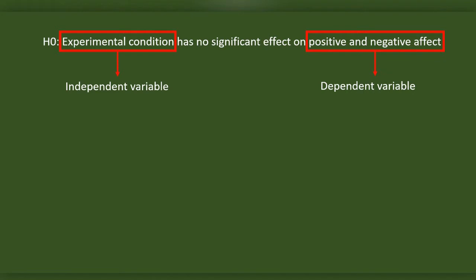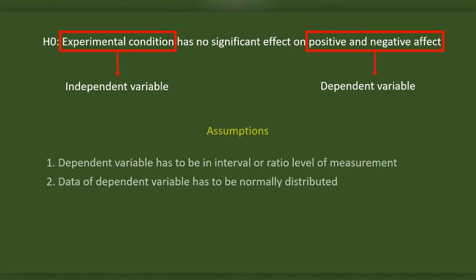To test this hypothesis using a Paired Sample T-Test, we need the dependent variable to be at interval or ratio measurement level, and the data of the dependent variable must be normally distributed.